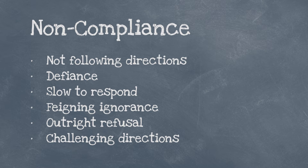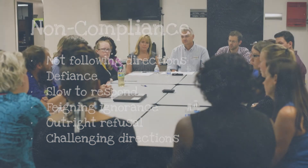Non-compliance can range from feigning ignorance and being slow to respond to outright defiance. Students may try to bait teachers into verbal back-and-forth, or ask off-topic questions during instruction — like asking about Red Ribbon Week in the middle of a writing lesson — or request to go to the bathroom three or four times during instruction. These are all forms of avoidance and non-compliance.